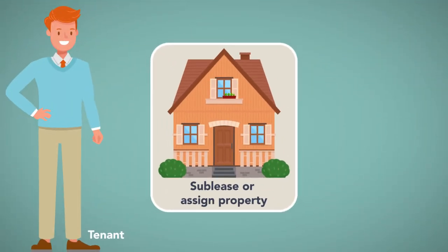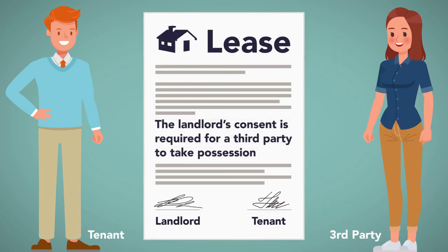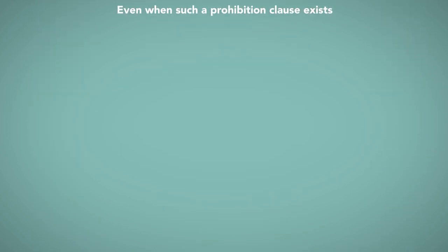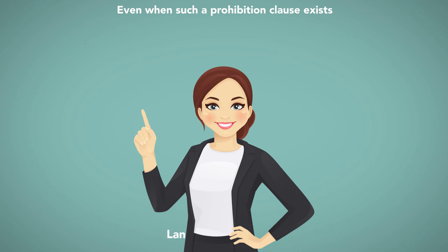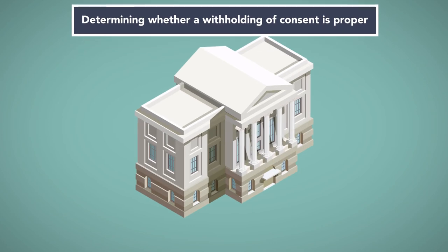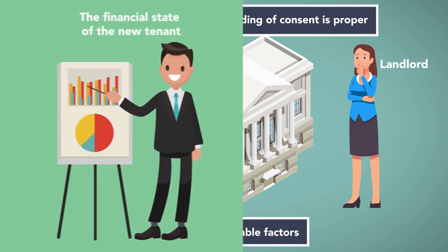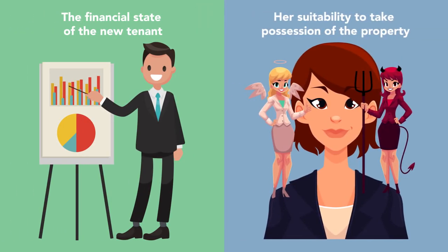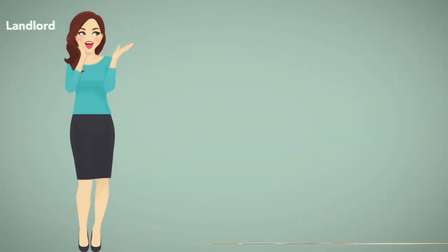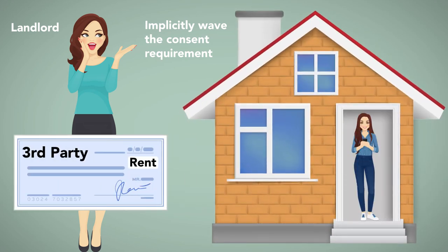The general rule is that a tenant may sublease or assign property to a third party unless there is a clause in the lease which requires a landlord's consent for a third party to take possession. Even when such a prohibition clause exists, a growing trend mandates that a landlord must have a reasonable reason to reject the assignment or sublease. Courts determining whether a withholding of consent is proper will ask whether the landlord looked to reasonable factors, such as the financial state of the new tenant or her suitability to take possession of the property, as the basis for the denial of consent. Note that a landlord may implicitly waive the consent requirement if she knowingly accepts rent from a third party in possession of the property.